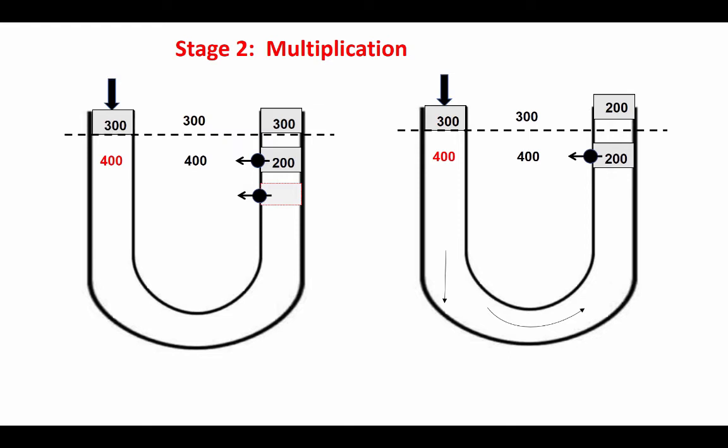The flow of fluid in the loop of Henle is continuous, which means by mass action whatever comes down the descending loop of Henle is going to be pushed up the ascending limb. In the previous step we made the descending limb slightly hypertonic, and the osmolality is 400 milliosmoles per kilogram. This fluid is going to be pushed down the loop and up the ascending loop.